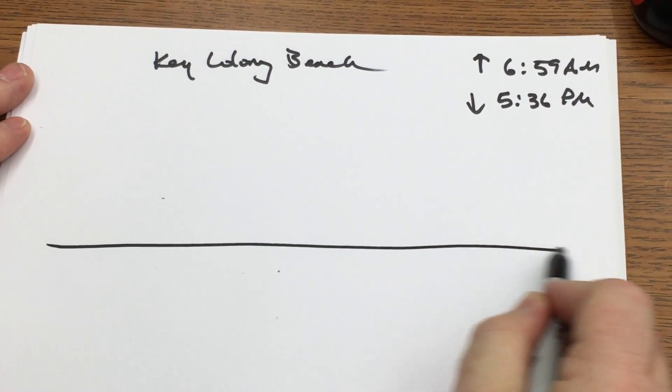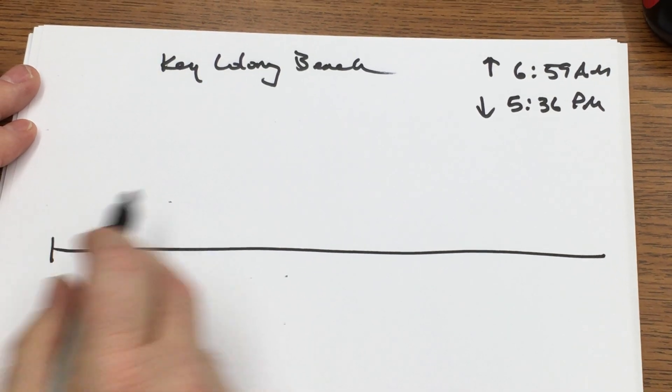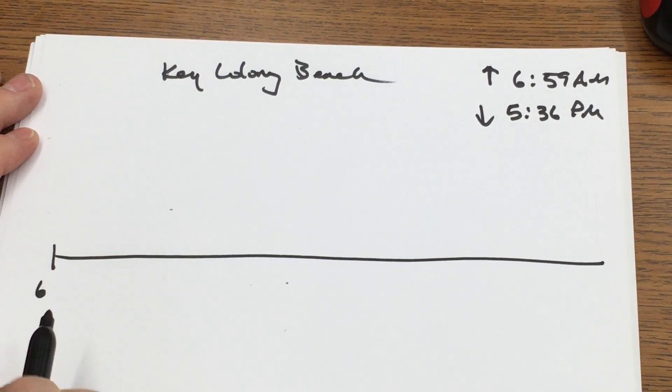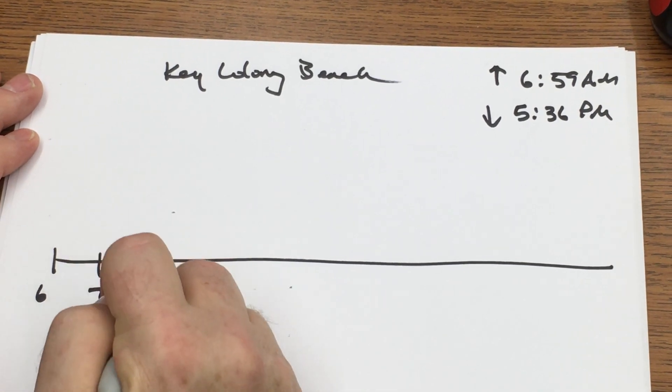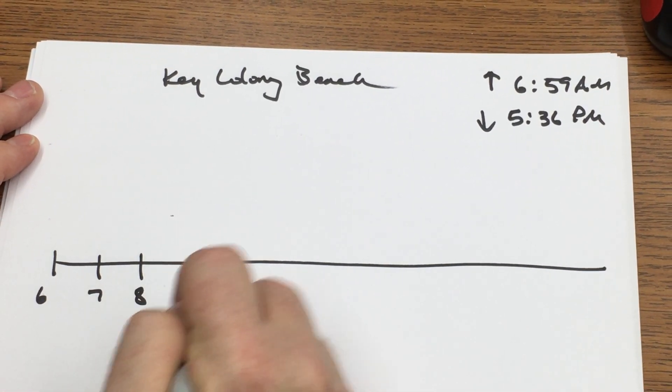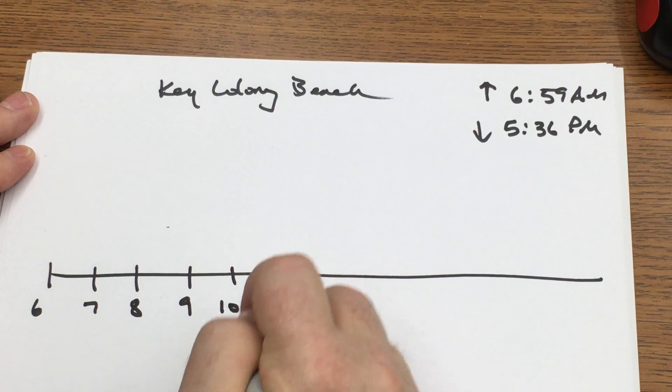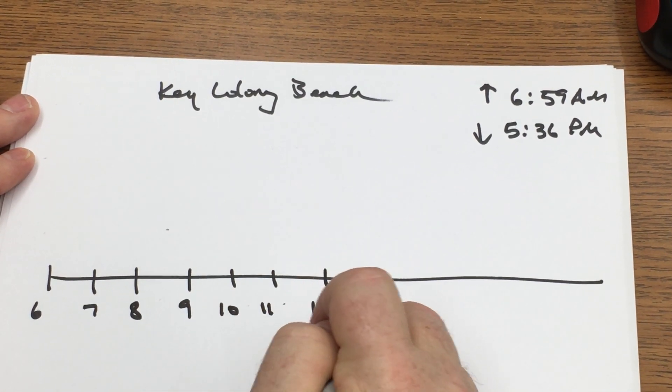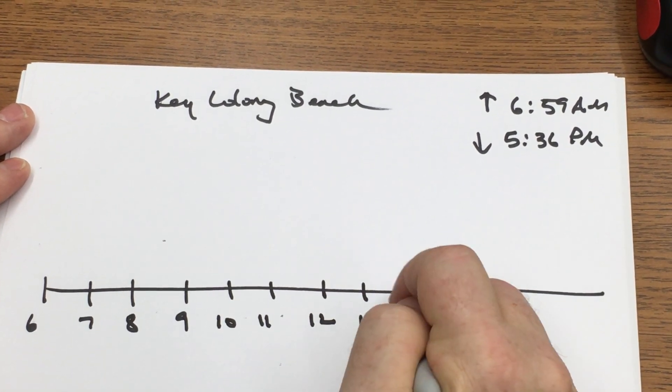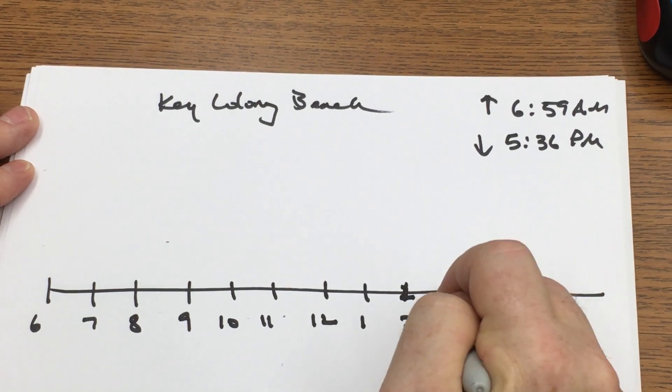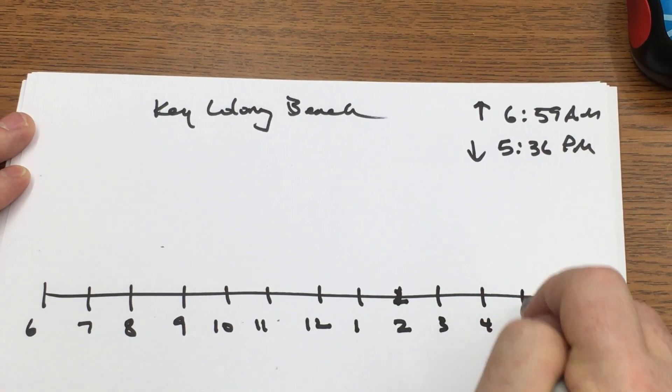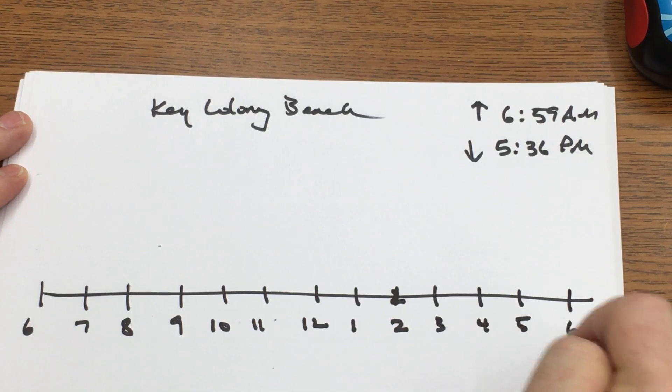So we're going to draw a line across. We're going to say that this is 6 o'clock in the morning. This is 7, this is 8, 9, 10, 11, 12, 1, 2, 3, 4, 5, and then I'm going to put a 6.